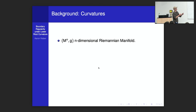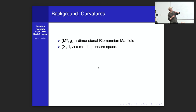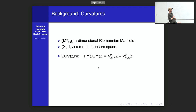Background notation: M will denote a Riemannian manifold. X will usually represent a metric space of some sort, d the distance, and ν a measure — that's a metric measure space. The Riemannian curvature tensor is a four-tensor: I take three vector fields X, Y, Z and get a new vector field.